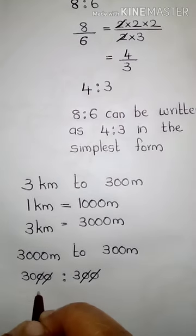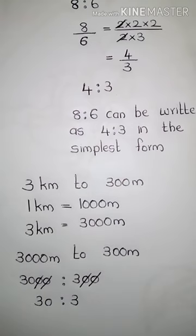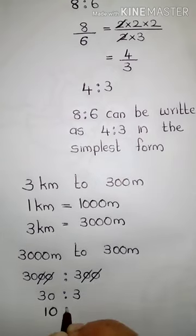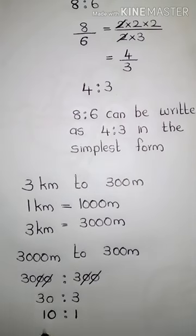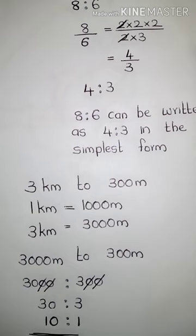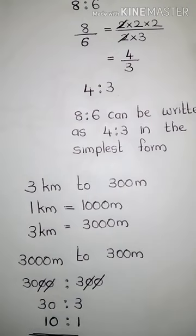After cancelling two zeros, we get 30 is to 3. The common factor of 30 and 3 is 3, so dividing both gives 10 is to 1. The final answer is 10 is to 1. First convert the bigger unit to the smaller one, then reduce the ratio to its simplest form. You have another example in your notebook: 30 days to 36 hours, where 1 day = 24 hours.